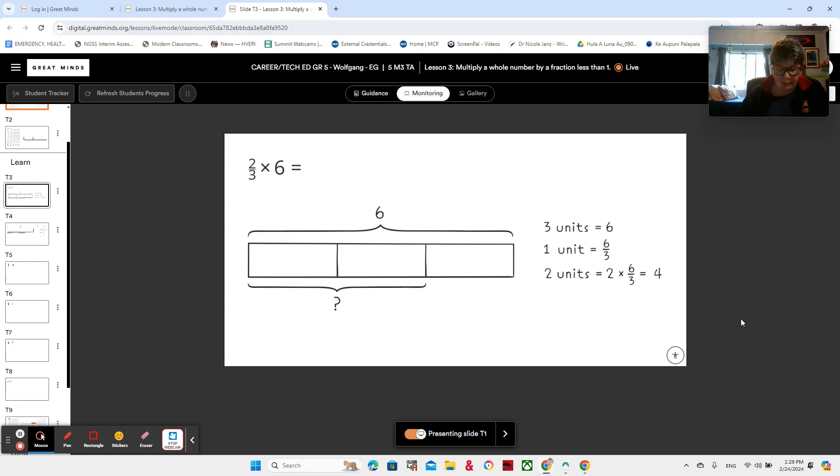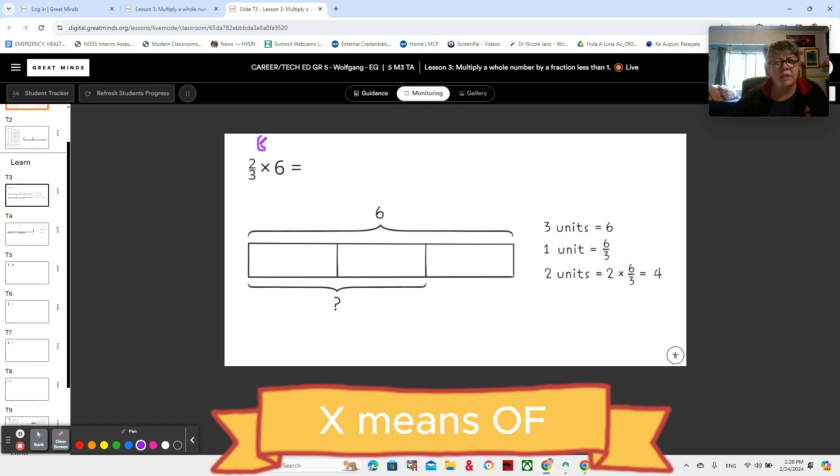So as you can see on the board, we have two thirds times six and a tape diagram. Two thirds times six is the same as two thirds of six. Think of the times sign as the word of. So far, we've just been saying what is two thirds of six. Now we're going to go straight to two thirds times six. But it means the same thing.